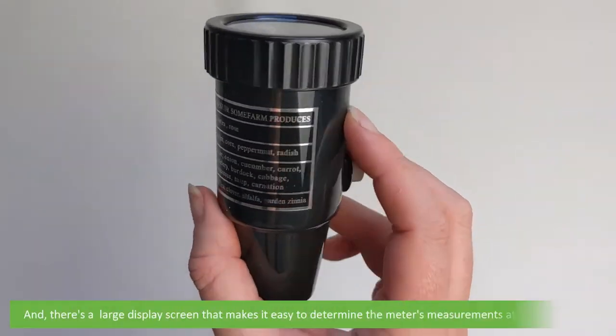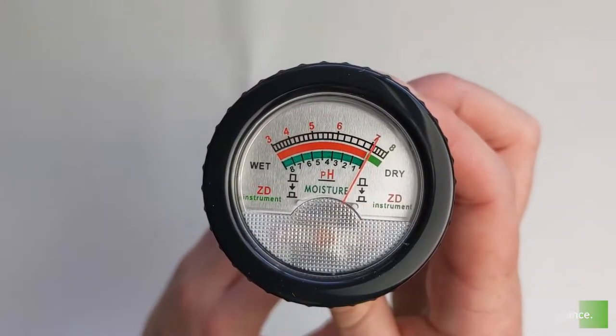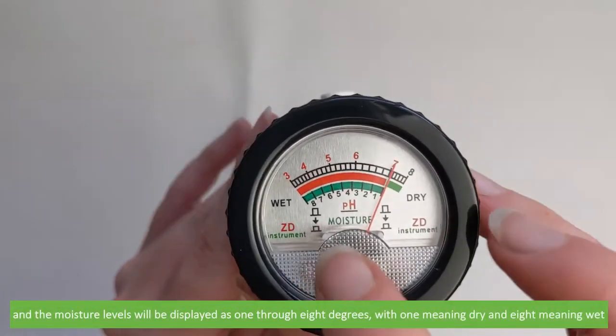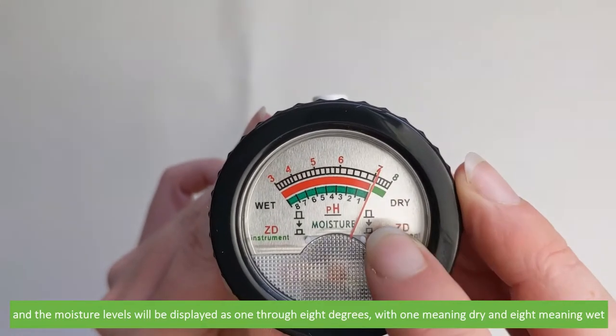There's a large display screen that makes it easy to determine the meter's measurements at a quick glance. pH can be measured from 3 to 8, and the moisture levels will be displayed as 1 through to 8 degrees, with 1 meaning dry and 8 meaning wet.